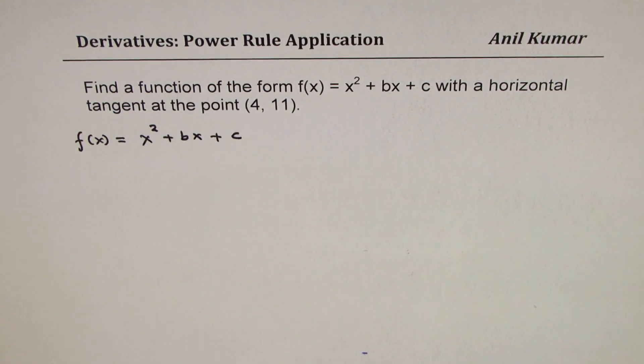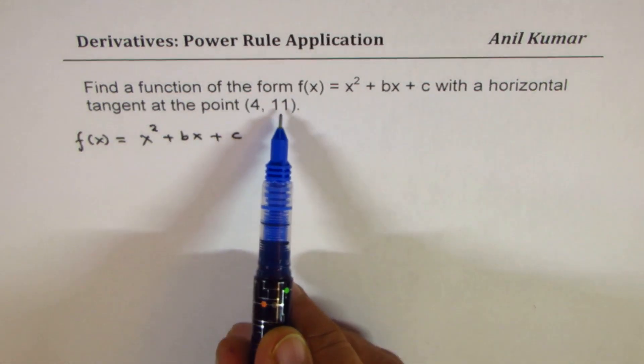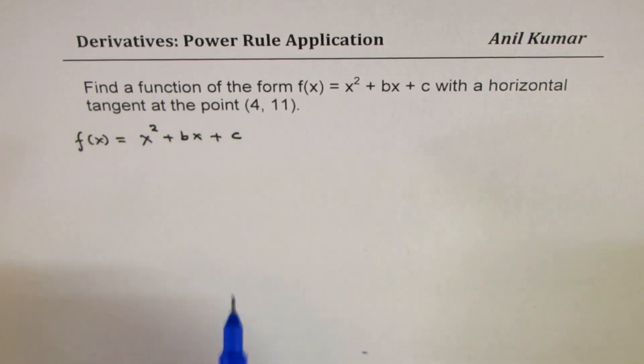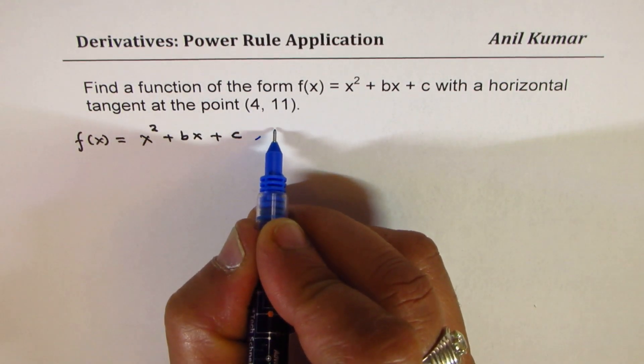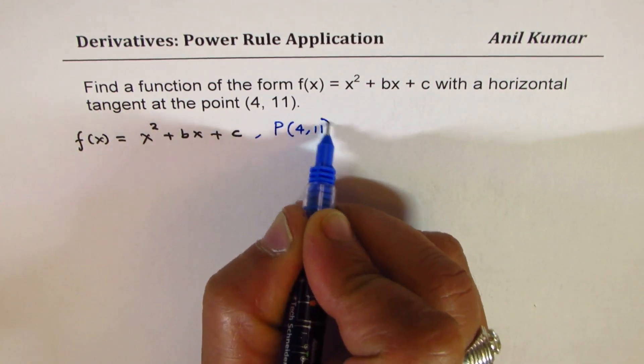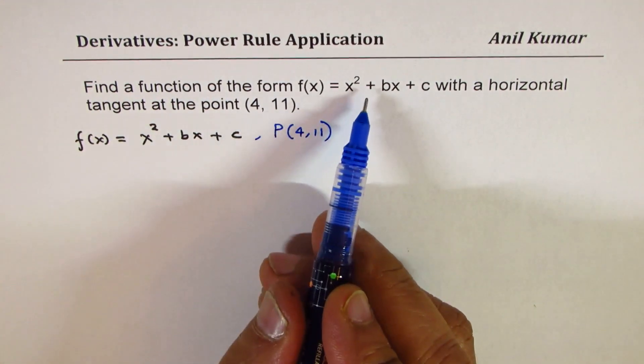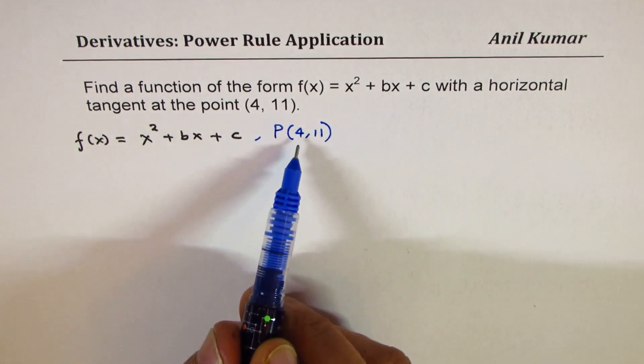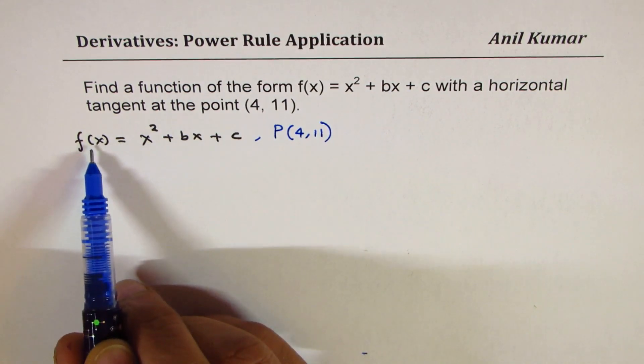One of the equations you can find using the point itself, which is (4, 11). When I say that this point, let's call this point as P (4, 11), is on the graph of this function, that means if x is 4, f(x) is 11.